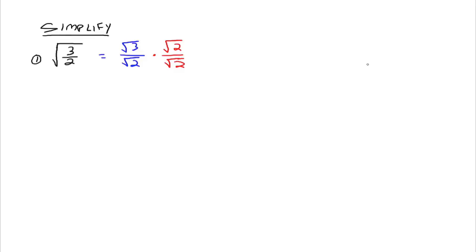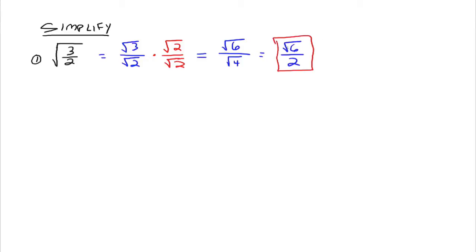So we're going to choose wisely. We want to multiply the square root of 2 times something so that when they multiply together, you do not have any square roots left over. The easy way to do that is just to multiply the square root of 2 by itself — square root of 2 times square root of 2. The square root of 3 times the square root of 2 is the square root of 6. The square root of 2 times the square root of 2 is the square root of 4, and the square root of 4 is 2. Now we do not have any radicals in the denominator. So the square root of 3 halves simplifies to the square root of 6 over 2.